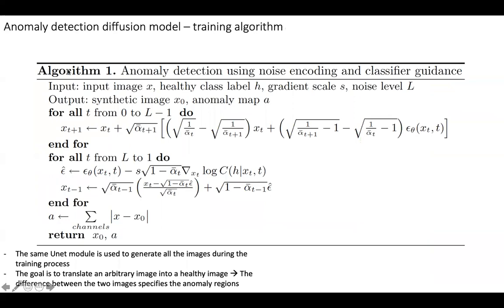Okay, here is the procedure code of the training process. The input of this approach is an input image and a healthy class label, and also gradient scale s and noise level L. These are parameters of the diffusion model. The output of this algorithm will be a synthesized image x0 hat, the reconstruction of x, and an anomaly map a that is derived from x and x0 hat.